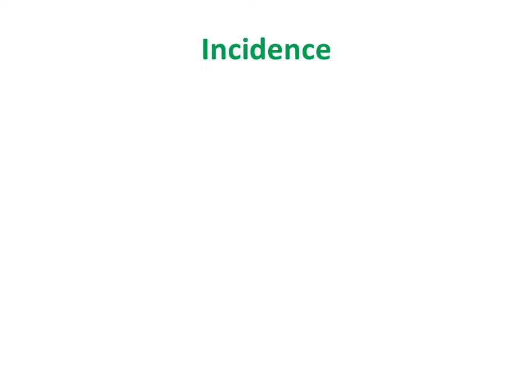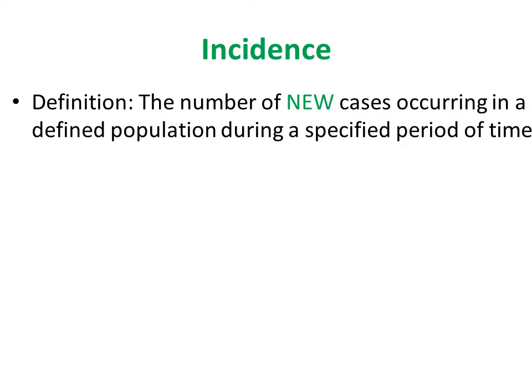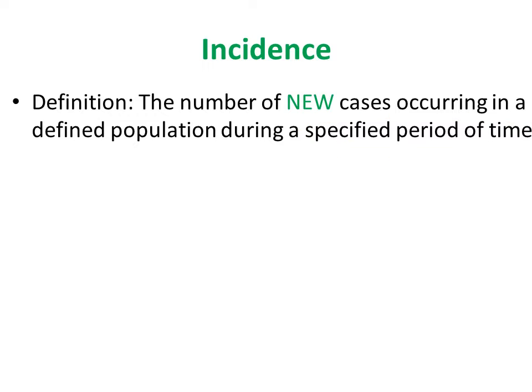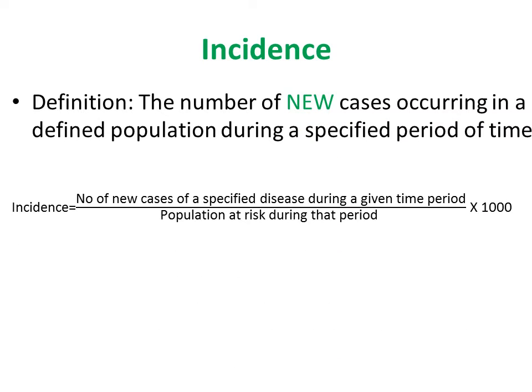Incidence is defined as the number of new cases occurring in a defined population during a specified period of time. The formula is: number of new cases in the specified population during a given time period, divided by the population at risk, multiplied by 1000. The unit of time is essential in expressing a rate.